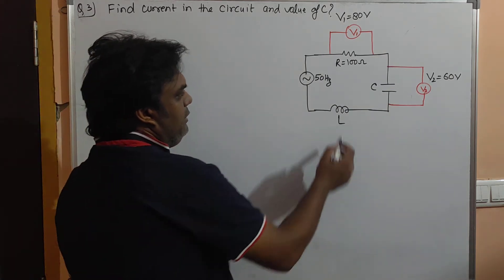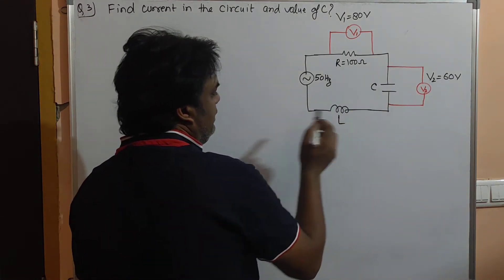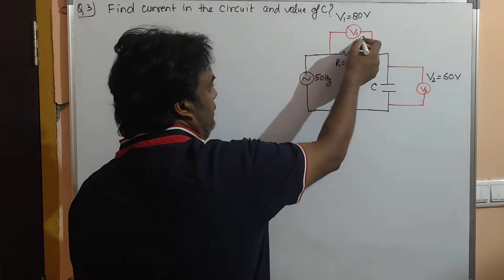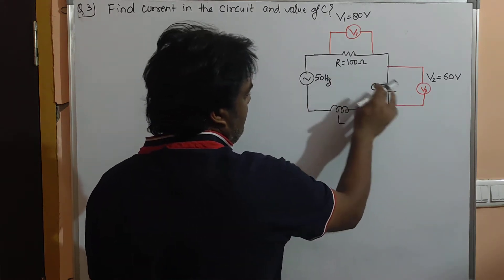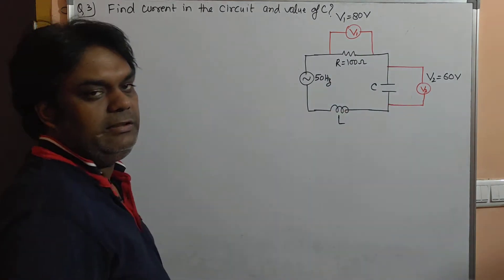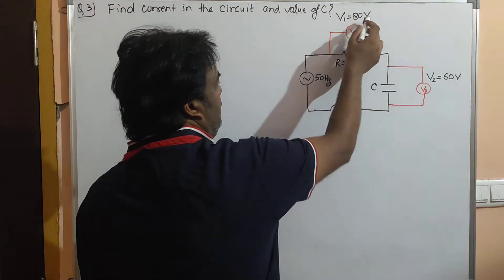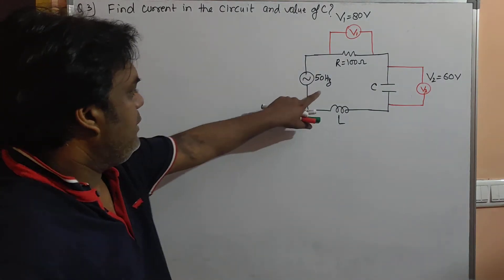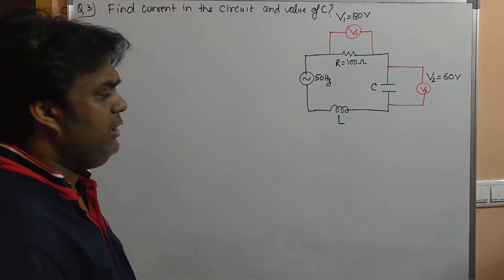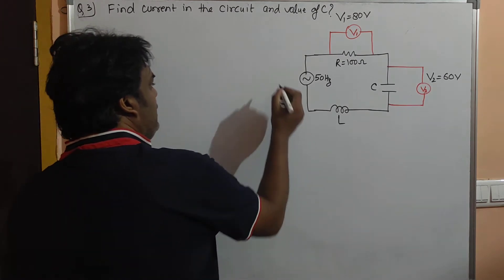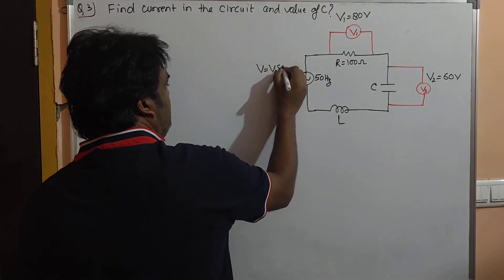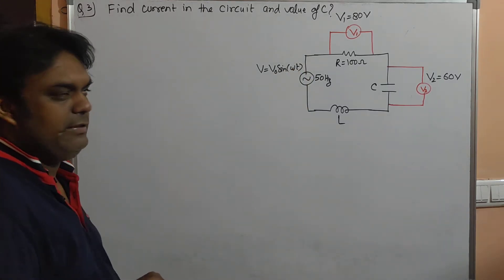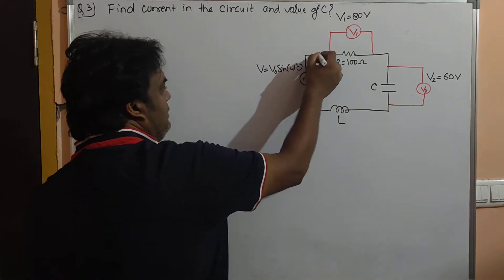Here the circuit diagram is given. In the circuit diagram, three components are there: resistor, capacitor, and inductor. There is a voltmeter V1 and V2 across resistor and capacitor. The reading of voltmeter V1 is 80 volts and V2 is 60 volts. The frequency of the AC source is given as 50 Hertz. The voltage V equals V₀sin(ωt) is there, but the value is not given. We need to find out the current in the circuit and the value of capacitor C.